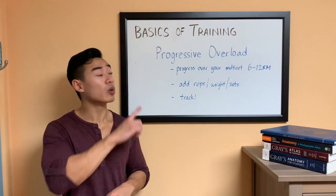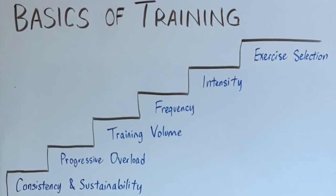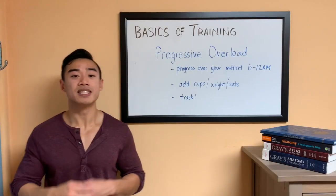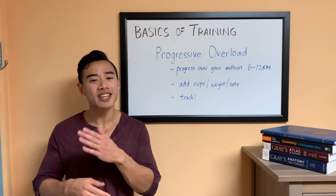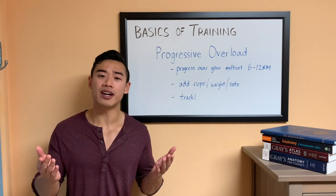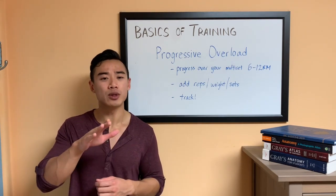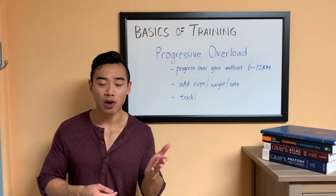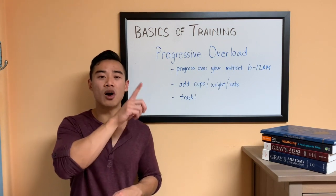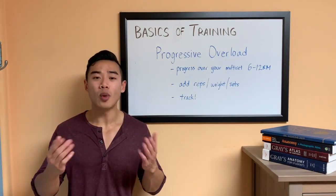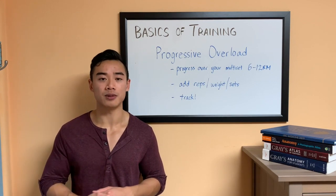I would remind you of the importance of progressive overload in our staircase of training priorities, as we talked about in the last video. Since progressive overload has so much priority at the base of the staircase, we should be thinking about it as we look at all the other training variables in our program. In other words, when you look at those other concepts — training volume, training intensity, exercise selection — you should be setting all of those variables in a way that allows you to progressively overload as best as possible.